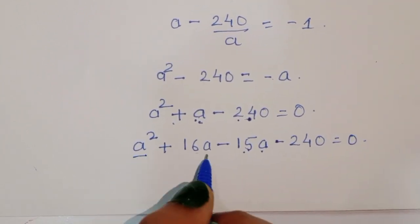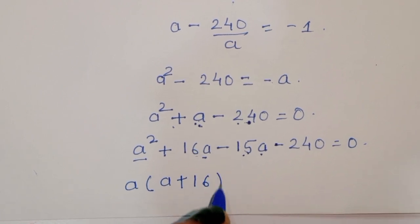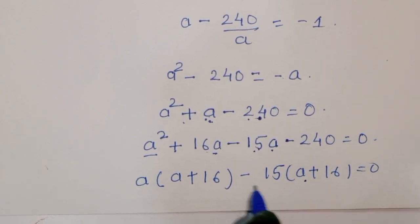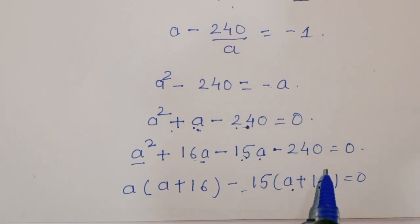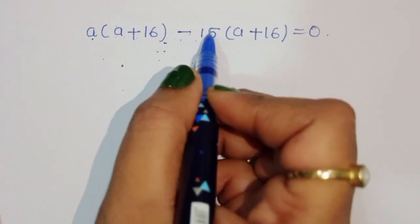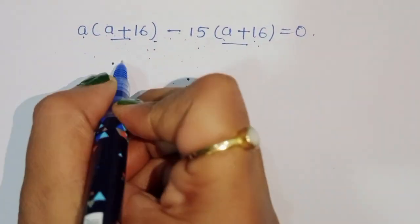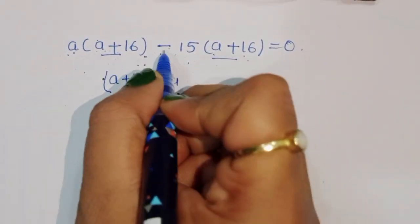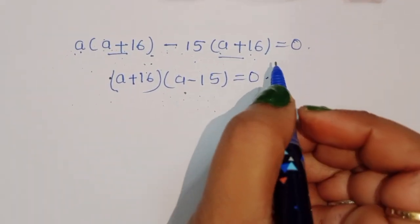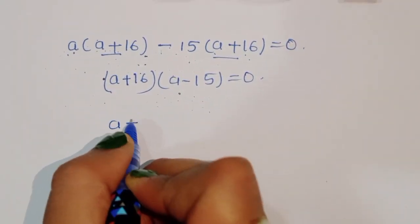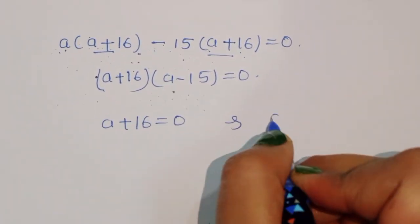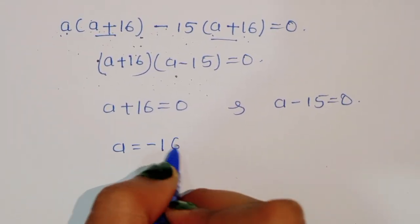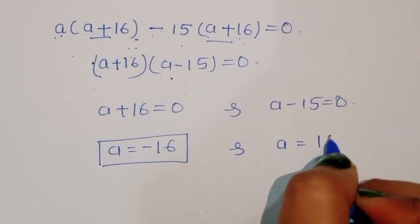Taking A plus 16 as common: (A plus 16)(A minus 15) equals 0. So we get two solutions: A plus 16 equals 0 giving A equals minus 16, and A minus 15 equals 0 giving A equals 15.